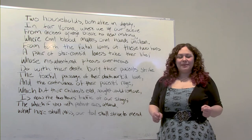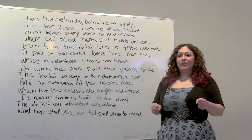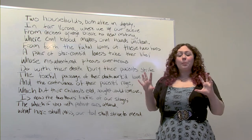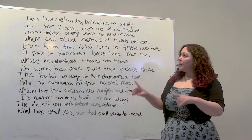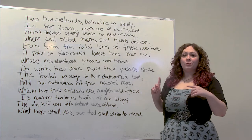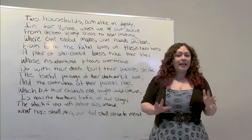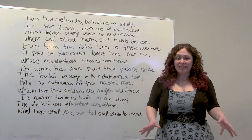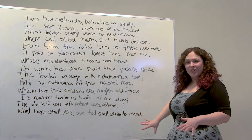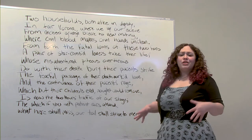Hey everyone, my name is Kim Douthat, and today we're going to be looking at Shakespeare — how to break down the text — and we're going to be using the prologue from Romeo and Juliet. You don't need a whole lot of materials. We have the text available right here for you. If you want to take any notes, you're welcome to do that. Grab a writing utensil and something you can write on.